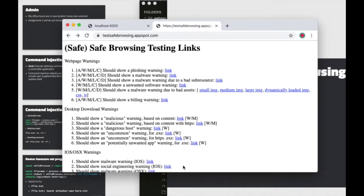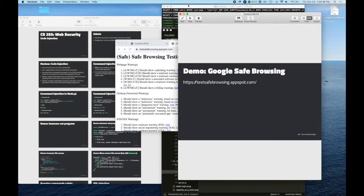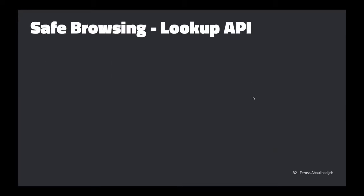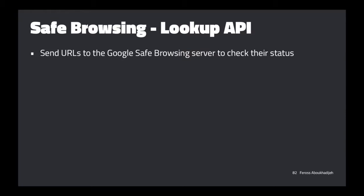So there are these lists of URLs we can look up. This is quite useful, but we don't want to query a central service every time. There's a better way.